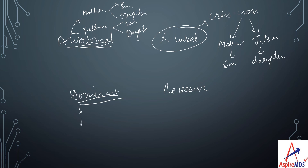Now talking about dominant and recessive: whenever each and every generation — either a male or a female — is affected, it is considered a dominant disease. This is called 'no skipping' — there won't be any skipping of generations. If there is skipping in any generation, then it is considered a recessive disease.